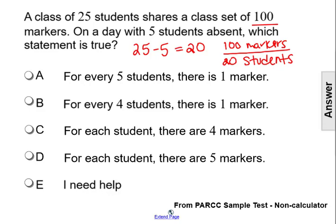We're looking for a unit rate. Since we're looking at markers per student, we have to eliminate choice A and B because the unit is going to be per student, not per marker. Think about it - one marker isn't sharing 5 students.